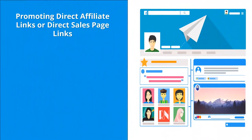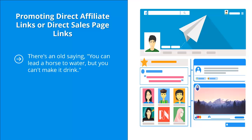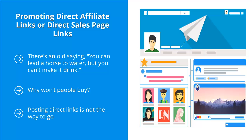Mistake four: promoting direct affiliate links or direct sales page links. There's an old saying — you can lead a horse to water but you can't make it drink. By the same token, you can get a lot of people on Facebook to click on your links, but don't expect them to convert once they go to that affiliate sales page or your own direct sales page. They haven't been properly qualified — in many cases they click out of curiosity, maybe by mistake. You still did not get a sale. Posting direct links is not the way to go.